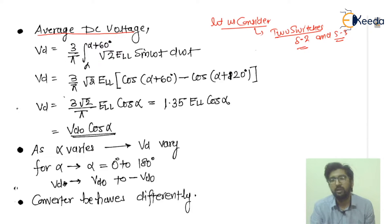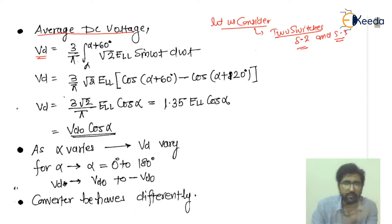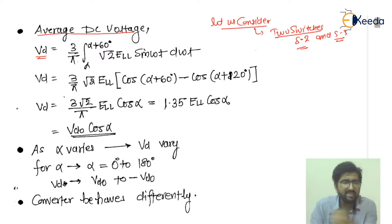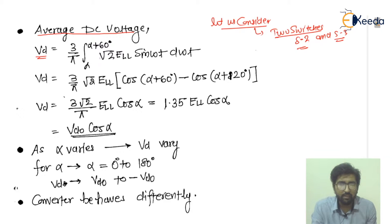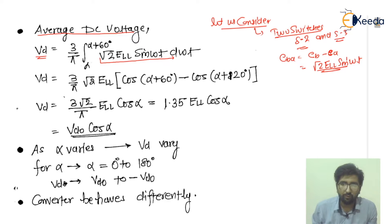If we talk about the average DC voltage, it is represented by VD. The average DC voltage VD is represented by (3/π) × (1/T), where the time period corresponds to 60 degrees — that is why I wrote 1/π × 3, which is 60 degrees. The integration is from α to α + 60°. The voltage VBA equals EB minus EA, which is root 2 · ELL · sin(ωt). We then integrate sin(ωt).